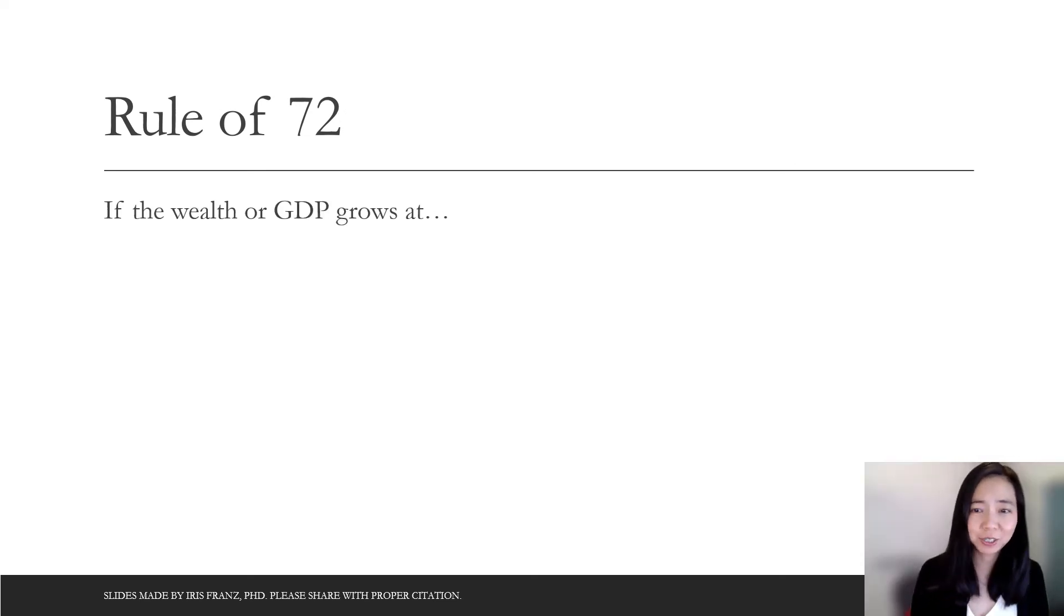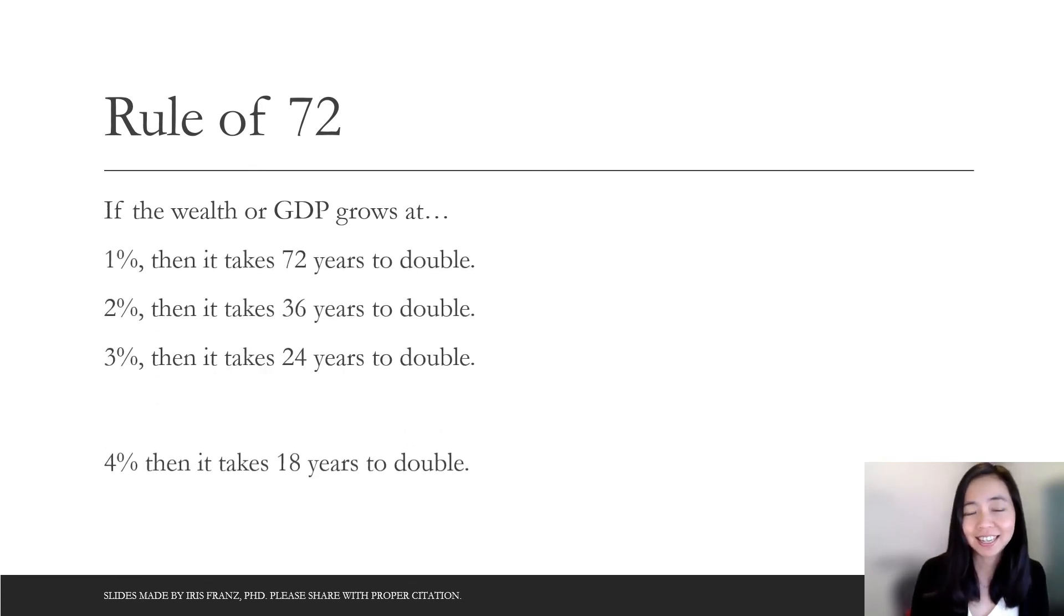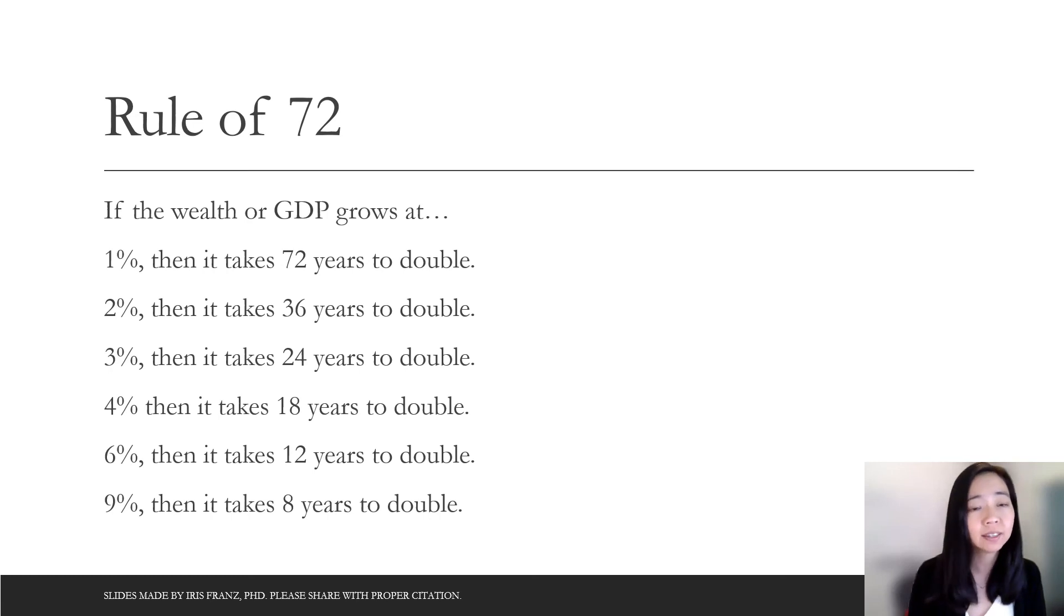Now with the rule of 72, it's a lot easier to calculate the number of years it requires to double the wealth. So if your growth rate is at 1%, then it takes 72 divided by 1, which is 72 years to double the wealth. If your growth rate is 2%, then it takes 36 years to double the wealth or GDP. So that will be 72 divided by 2, which gives you 36. And what about if your growth rate is 3%, then the rule of 72 tells you it takes approximately 72 divided by 3, which is 24 years to double your wealth or GDP, and so on and so forth. So with the rule of 72, it's a lot faster to calculate approximately how many years it takes for your wealth or your GDP to double.